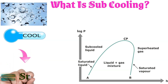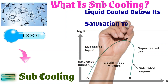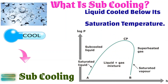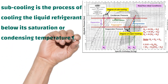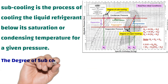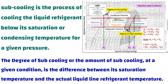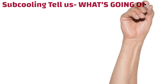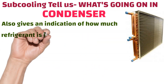Sub-cooling is the process of cooling the liquid refrigerant below its saturation or condensing temperature for a given pressure. The degree of sub-cooling at a given condition is the difference between its saturation temperature and the actual liquid line refrigerant temperature. Sub-cooling tells us what is going on in the condenser and also gives an indication of how much refrigerant is in the condenser.